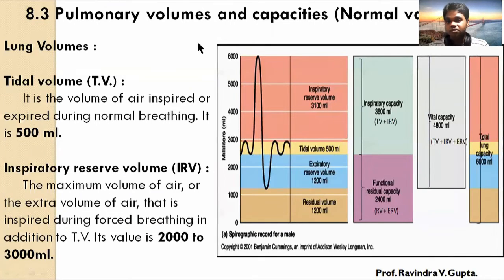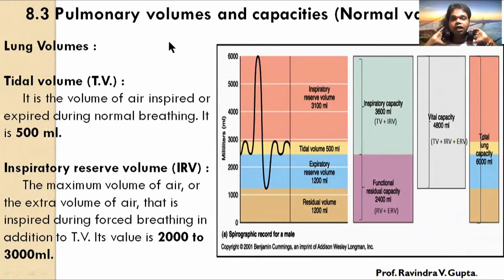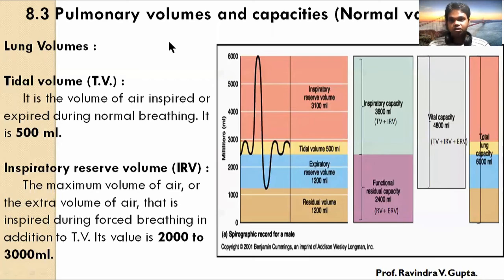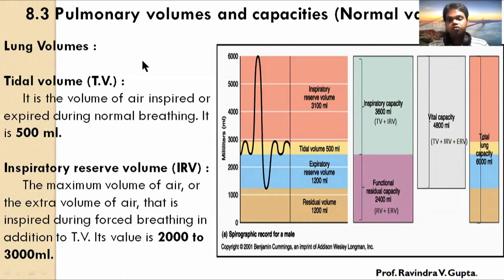We are starting with the pulmonary volumes and pulmonary capacity — that is the normal volume of lungs. The first one is Tidal Volume, short form TV.